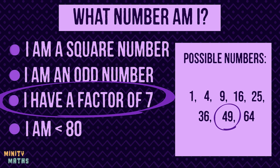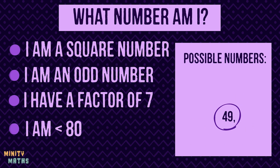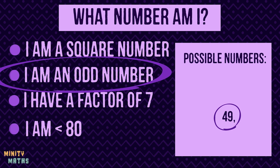We don't need to examine any other clues now, except to check that our answer is correct. We can use the odd number clue to double check that it is correct and satisfies all of the conditions.